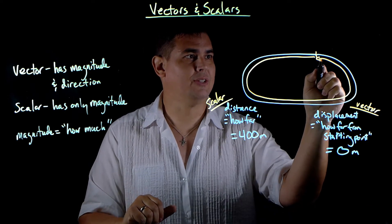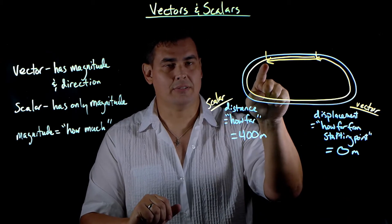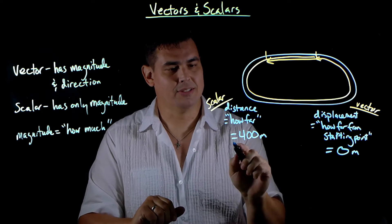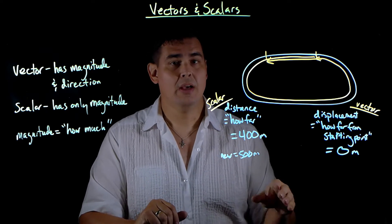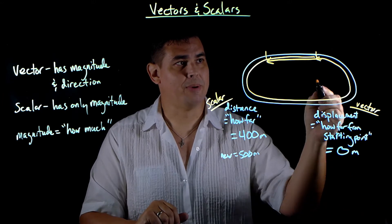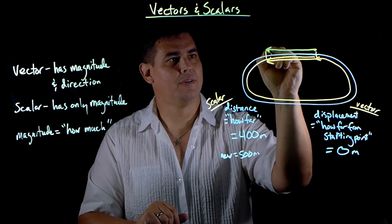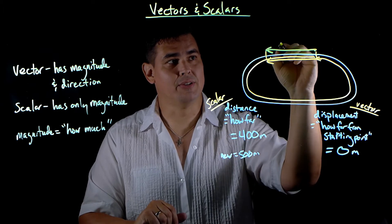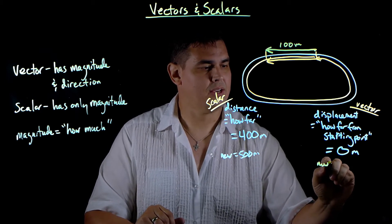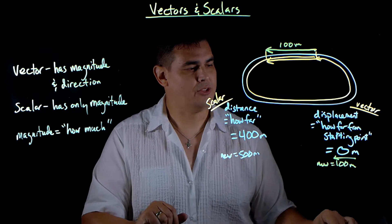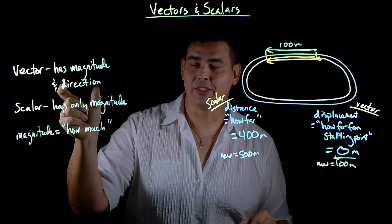Let me give a different example. Let's say you ran 500 meters instead, so you ended up a different point on the track. The distance is easy — 500 meters. But the displacement is different. Displacement is measured by drawing an arrow from where you started to where you finished. The length of that arrow is the magnitude, and in this case that's 100 meters. So my displacement is 100 meters in a specific direction — east, west, north, south, or shown with an arrow — because vectors have directions.